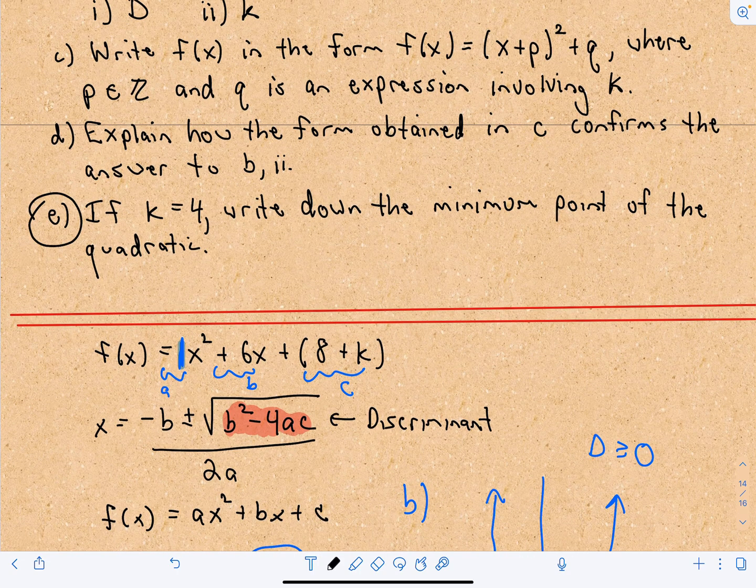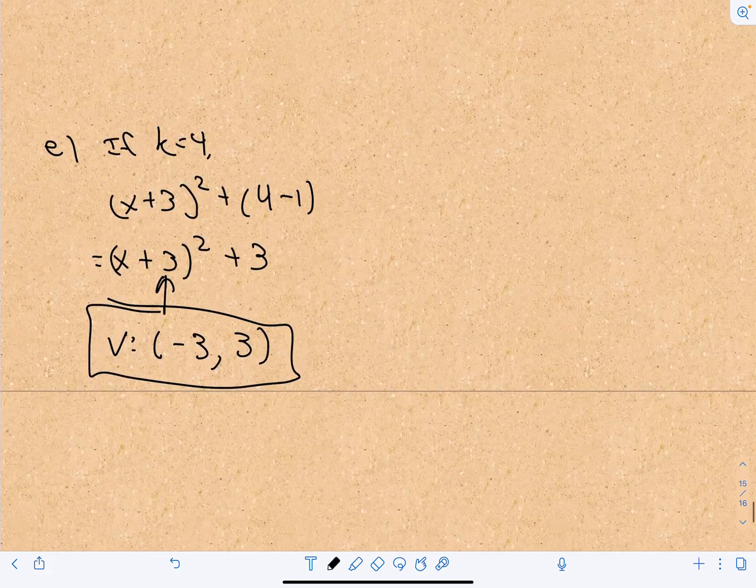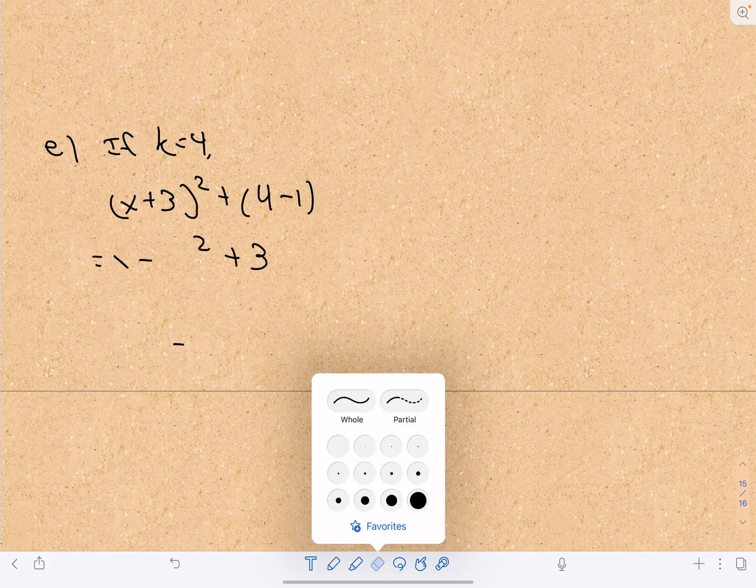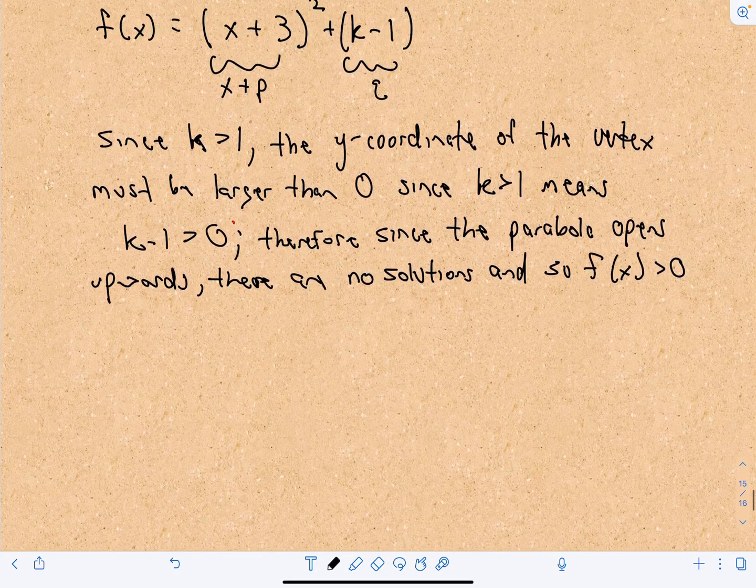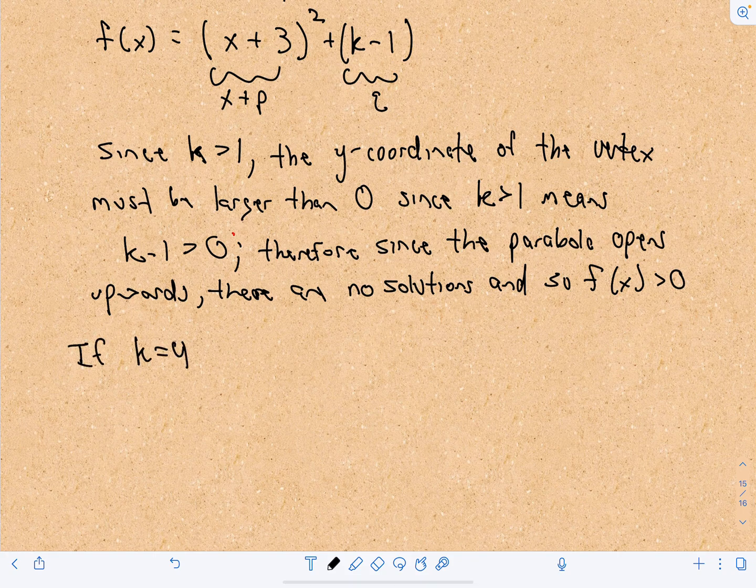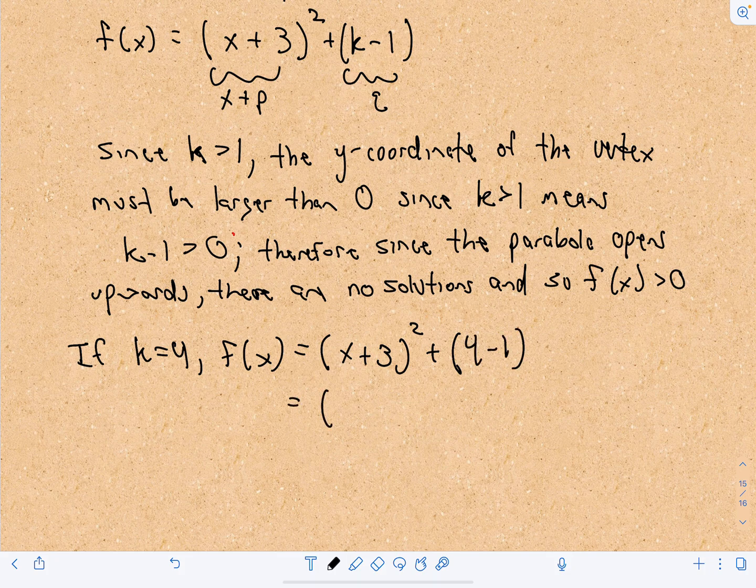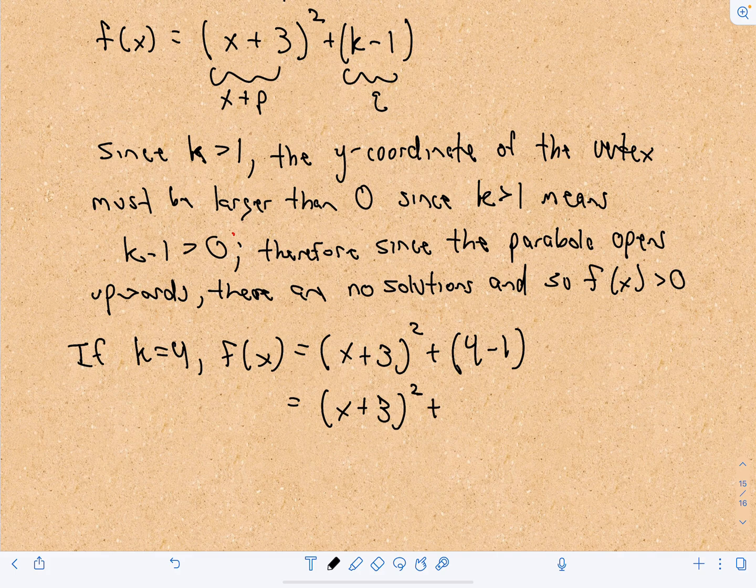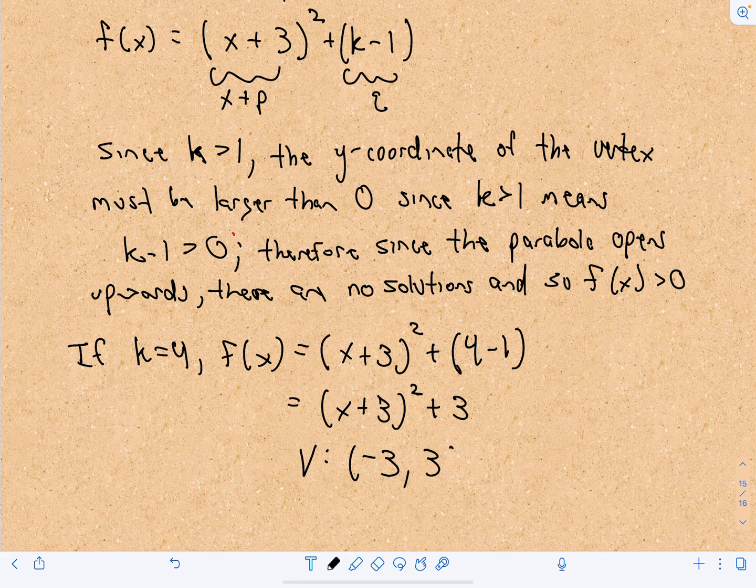Okay, last but not least, if k equals 4, write down the minimum point of the quadratic. Okay, no problem. So if k equals 4, then our function f(x), we're going to have x plus 3 quantity squared plus, well, 4 minus 1. And that's going to give us x plus 3 quantity squared plus 3. So that's going to mean our vertex. We have to take the opposite sign here. So the x-coordinate of the vertex will be negative 3, and the y-coordinate will be sitting at positive 3. So that would be our solution.